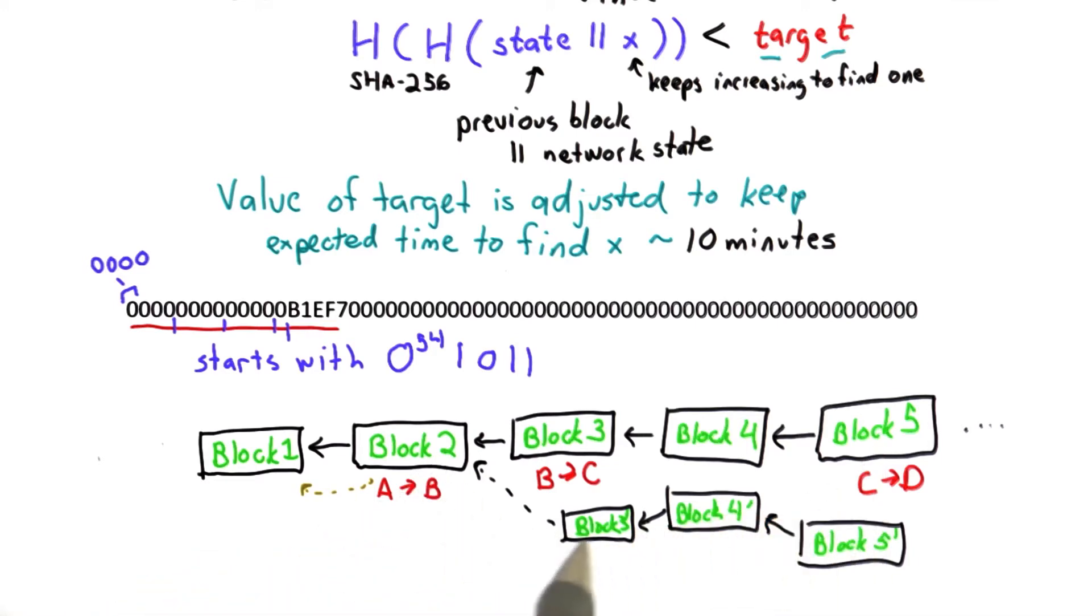If an adversary wants to create a longer chain with a different view of transactions, so if Bob wants to double spend this coin and give the same coin to both Kathy and Doug, what Bob would need to do is create a longer chain that convinces Doug that this is the correct view of the network and this view is incorrect.